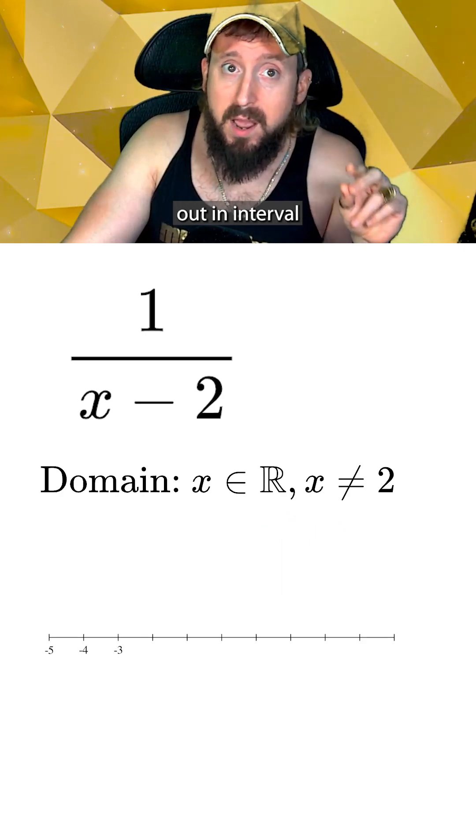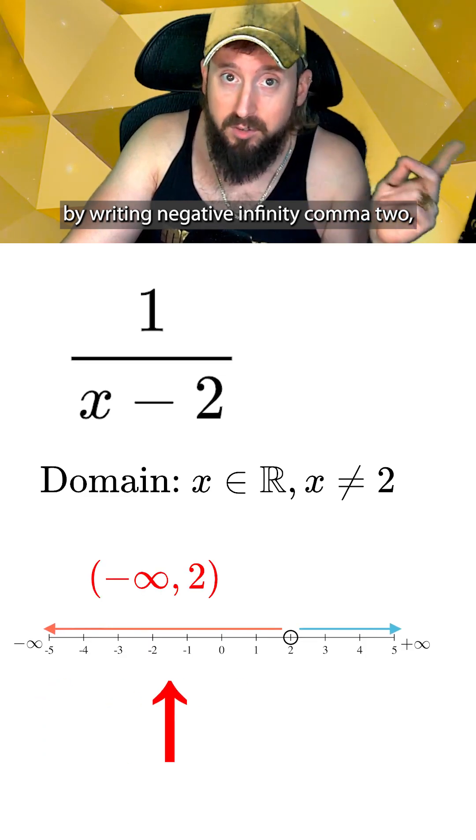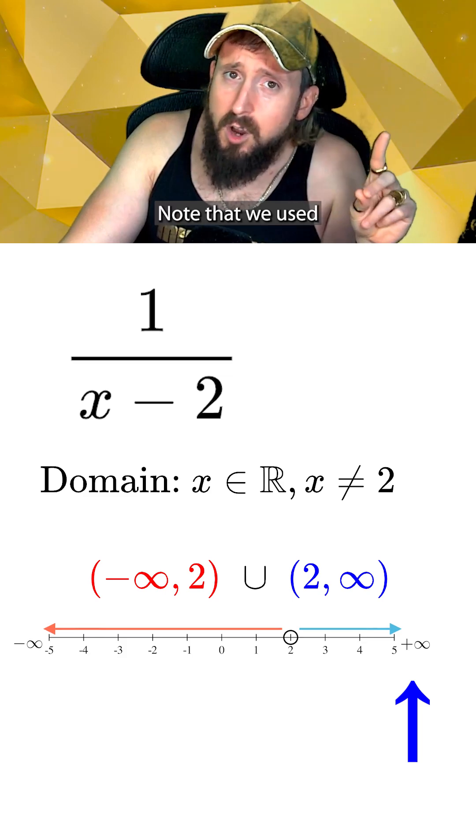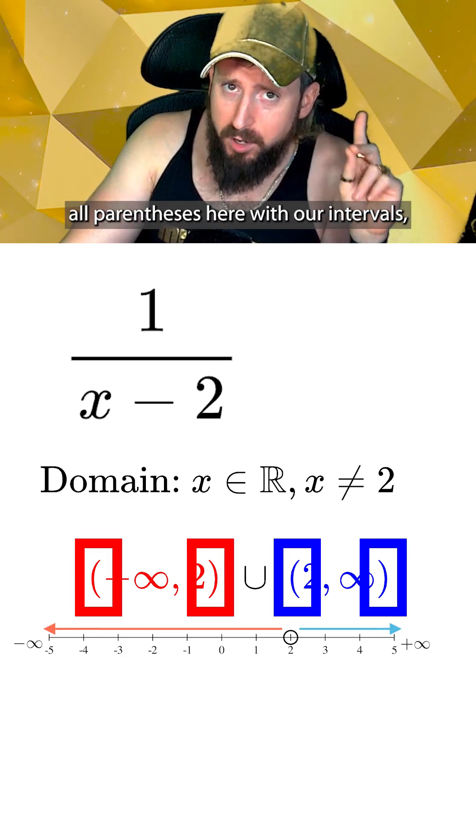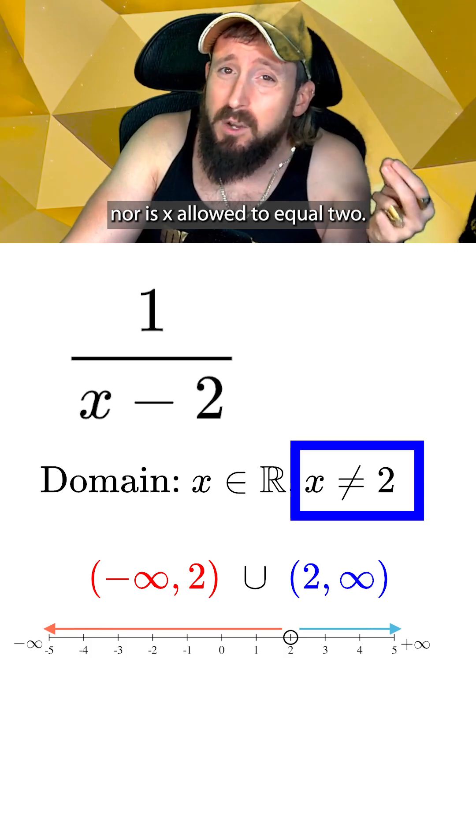This means when writing our domain in interval notation, we skip 2 by writing negative infinity comma 2, and then union to connect the other side, 2 comma positive infinity. Note that we used all parentheses here with our intervals, because nothing can actually equal infinity, nor is x allowed to equal 2.